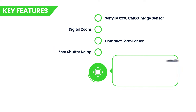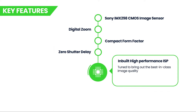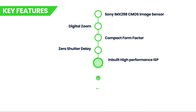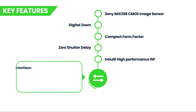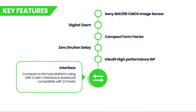It has an inbuilt high-performance image signal processor which is tuned to bring out the best-in-class image quality. C3 Cam 160 connects to the host platform using a USB 3.1 Gen 1 interface and is also backward compatible with USB 2.0 host ports.